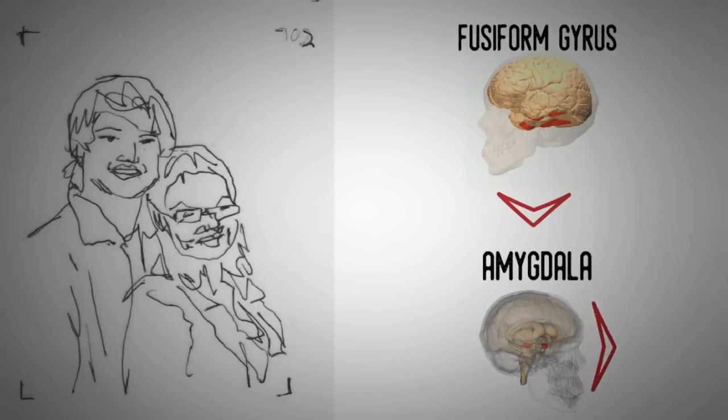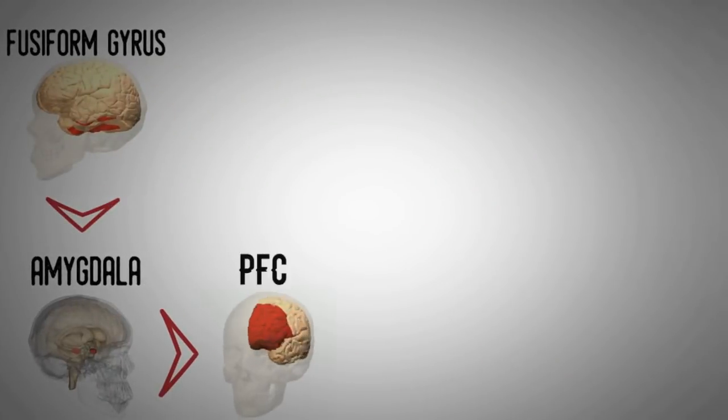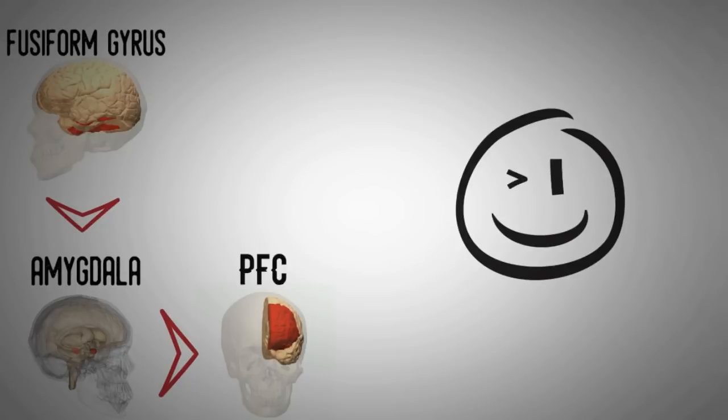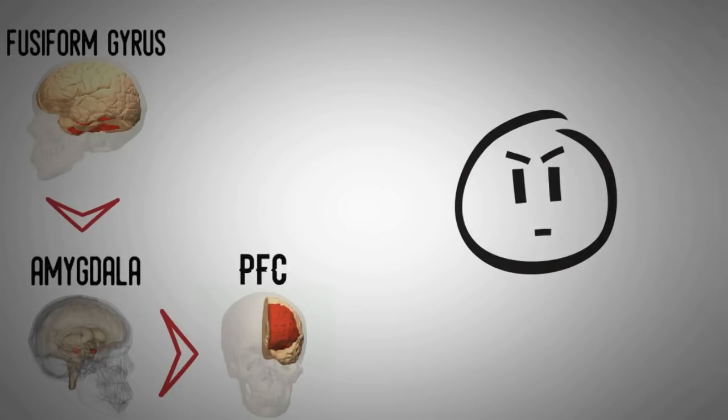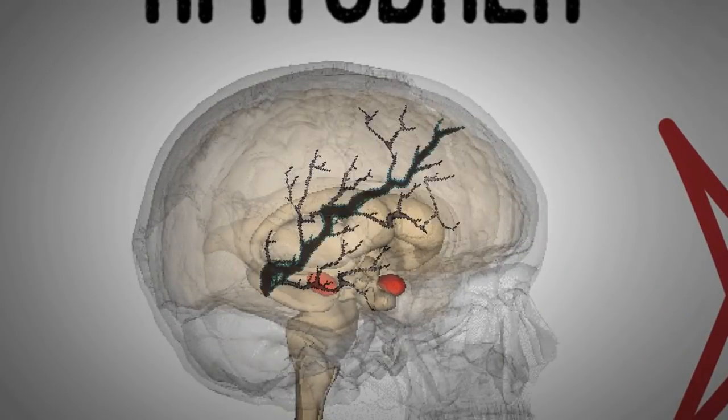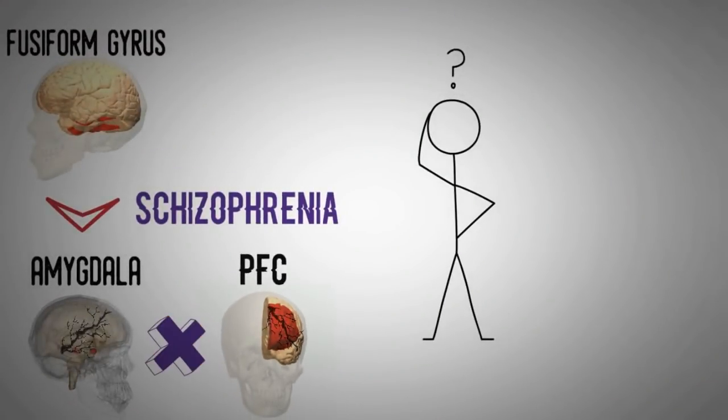Then it sends this information to the prefrontal cortex, where you will have the conscious awareness of whether someone is happy or mad at you and decide how to behave accordingly. The brains of people with schizophrenia show alterations in the circuitry, which may contribute to delusional beliefs such as that someone is plotting against them.